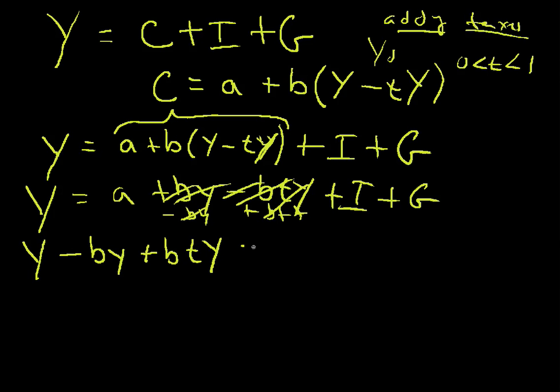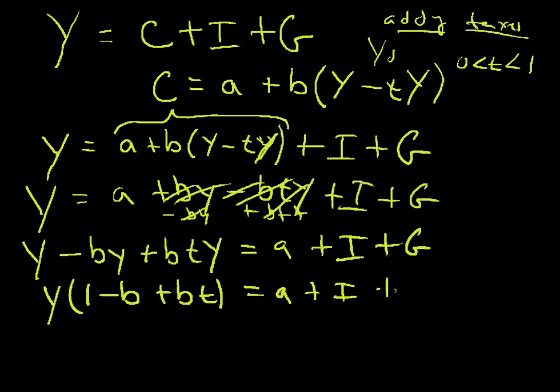So all that stuff's gone. So this stuff equals a plus i plus g. And so now we have these terms with y and we pull the y out of this long equation here. We get y, that's a 1 minus b plus bt equals a plus i plus g.